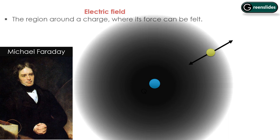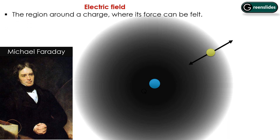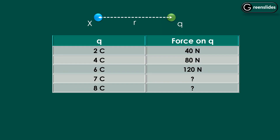So how can we define electric field? It is the region around a charge where its force can be felt. Now, here is a simple problem. We have a charge x, and at some distance r from x, there is another charge q. A table tells us: for 2 coulombs the force is 40 N, for 4 coulombs it is 80 N, for 6 coulombs it is 120 N. You have to calculate the force if we place 7 or 8 coulombs at the same point.